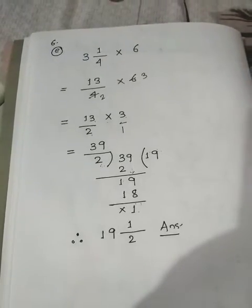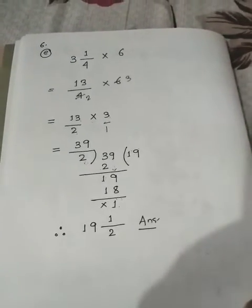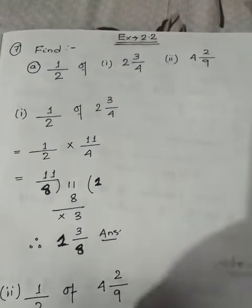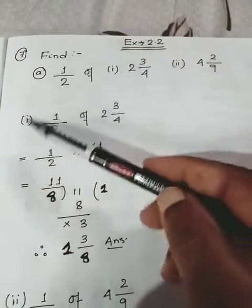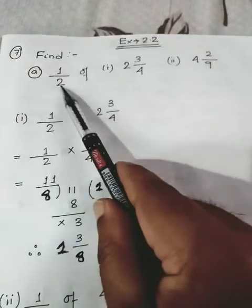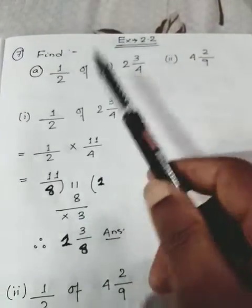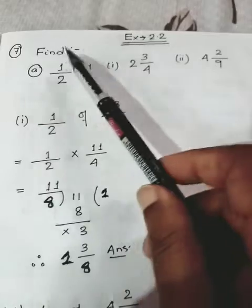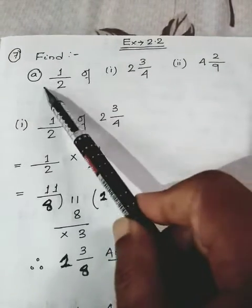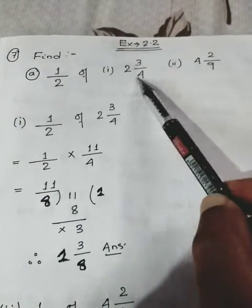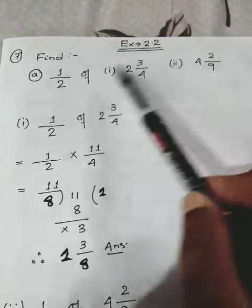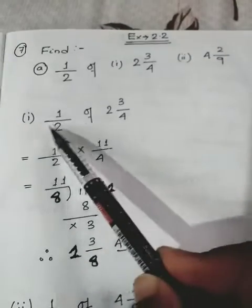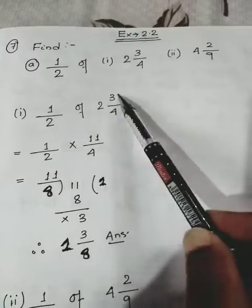There are altogether 6 sums in question 6 but I have only performed 3 sums. Let's move on to question number 7. Question 7 has 2 parts, (a) and (b). I've shown you how to perform (a) and you all will do (b) also — it's very simple. Question 7 is asking: find 1/2 of 2 3/4.